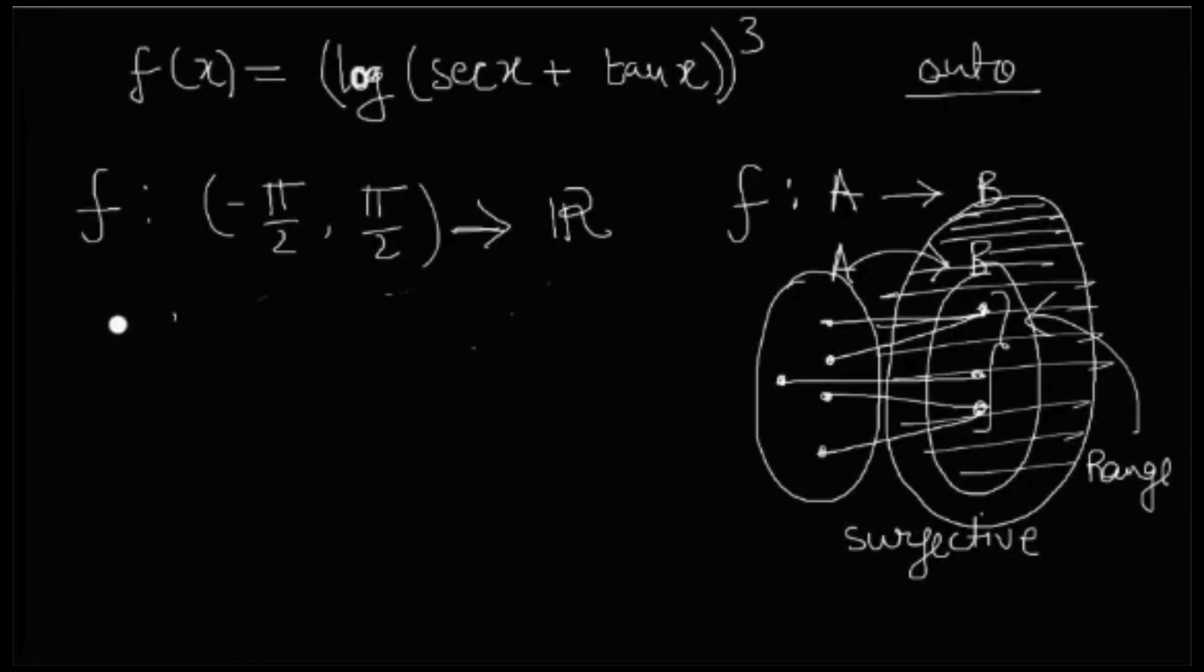The thing is, so it's just observation. For x tending to pi by 2, f of x is, so cos pi by 2 is 0, right?